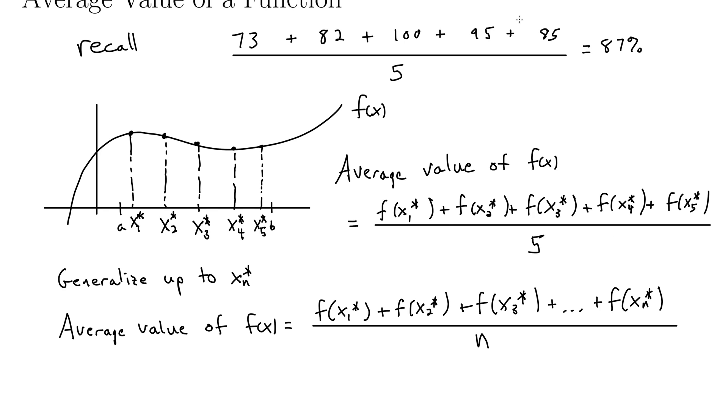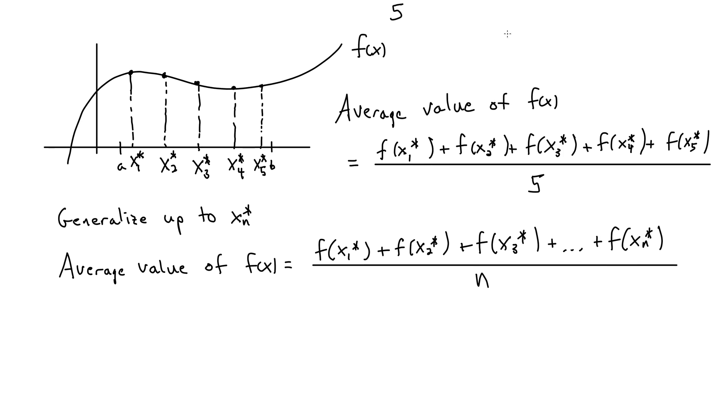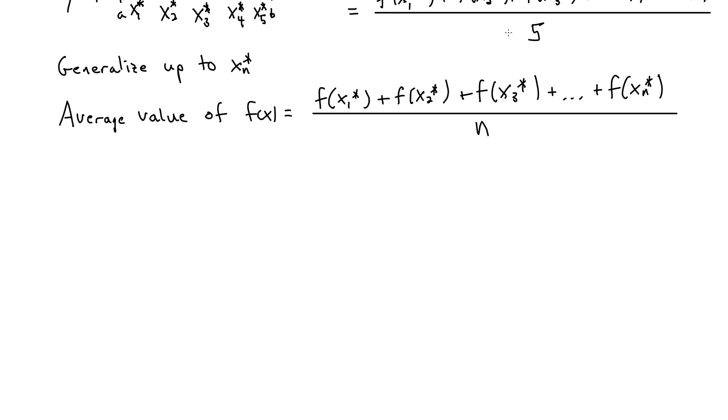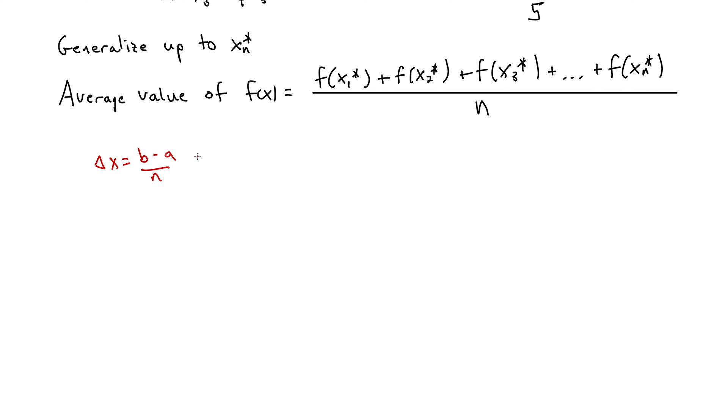But recall that delta x equals b minus a over n. So we can solve this for n to get n equals b minus a over delta x and plug it in here. So this gives us an average value of the same sum up top, now all multiplied by delta x and divided by b minus a.